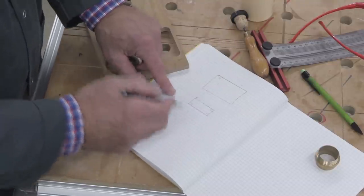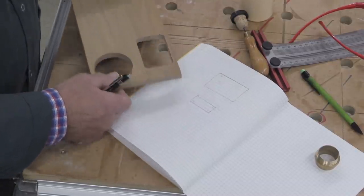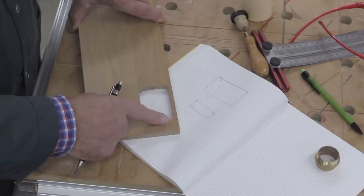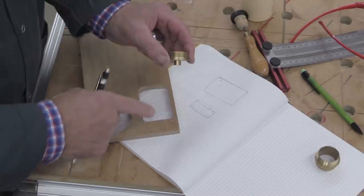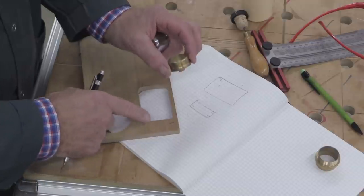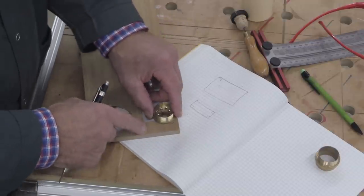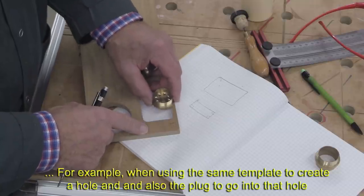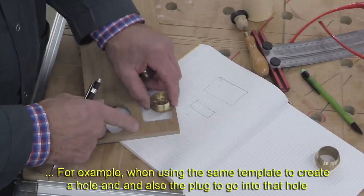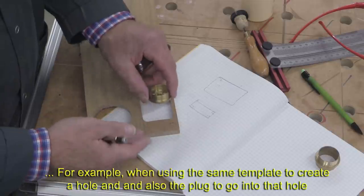So, therefore, the rule is that if you have a template, its corners must have a radius which is greater than the radius of any guide bush you're going to use. And bearing in mind, sometimes you might be using two guide bushes in the same template in order to achieve something particular.